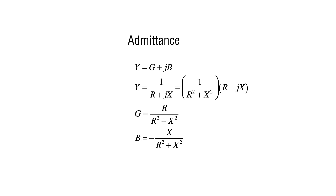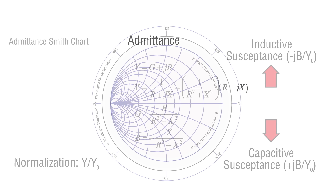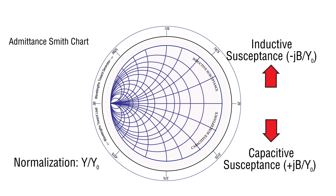One thing to notice is that B, the susceptance, will be the opposite sign from the reactance. In an admittance chart, the top half still represents inductances, but now with a negative sign, and the lower half still represents capacitances with a plus sign.